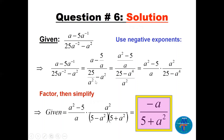In the numerator, a is the LCD giving (a² − 5)/a. In the denominator, a² gives (25 − a⁴)/a². Dividing two fractions means multiply by the reciprocal: (a² − 5)/a times a²/(25 − a⁴). Factor the denominator as (5 − a²)(5 + a²). Note that (a² − 5) and (5 − a²) differ by a sign, giving minus 1. After cancellation, the final answer is −a/(5 + a²).